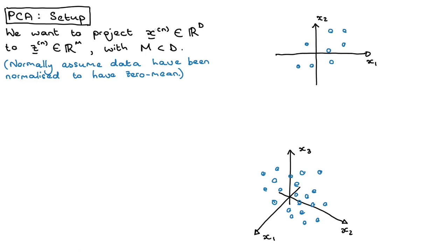Normally we assume that the input data set has been normalized to have zero mean. You don't strictly need this — you can always just subtract the mean and then add it in afterwards. But the derivation is much simpler by assuming zero mean. How we will project the data points to the lower dimensional space is by using what we call projection vectors.